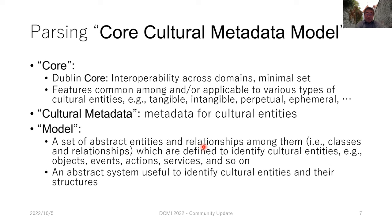This interest group is named Core Cultural Metadata Model. At the workshop yesterday we had some discussion about that name. My definition: 'core' because we are working at DCMI, emphasizing interoperability across domains and a minimal set — features common among and applicable to various types of cultural entities. 'Cultural metadata' is metadata for cultural entities, and 'model' is a set of abstract entities and relationships — classes and their relationships — defined to identify cultural entities: objects, events, actions, services, and so on.